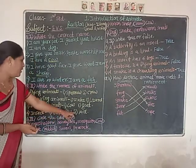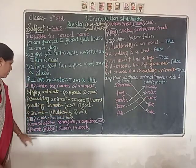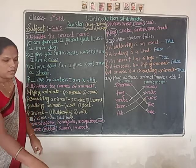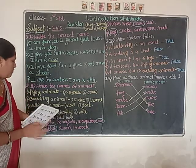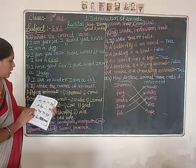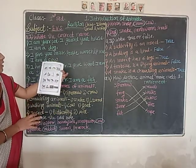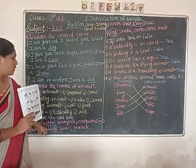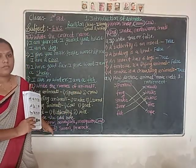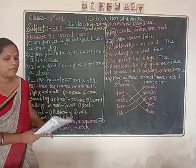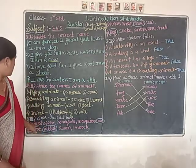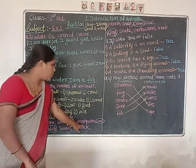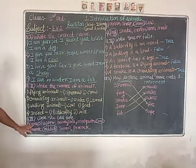Next is question number 3 — circle the odd one. You have to find which one is the odd animal. First group: grasshopper, honeybee, mosquito, and cow. Which one is odd? Cow. Why? Because grasshopper, honeybee, and mosquito are all insects, and cow is a domestic animal. So cow is the odd one — circle the cow.